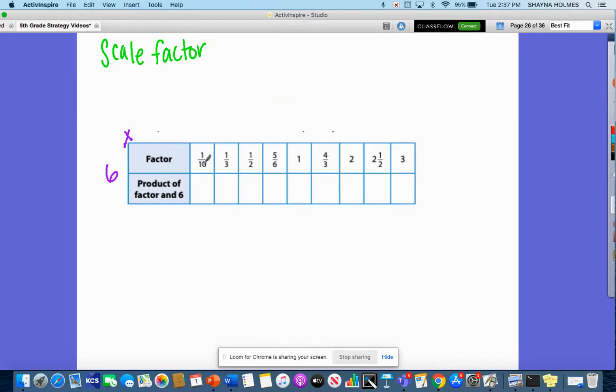So I have one-tenth times six. So that gives me six-tenths. I have a scale factor of one-third times six, and that is two. And then I have one-half times six, and that is three, because six sets of a half are three. Five-sixths times six is five. And then one times six is six.